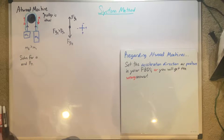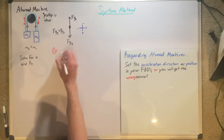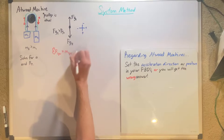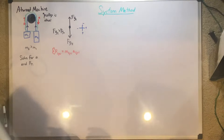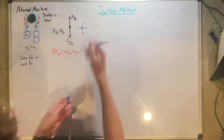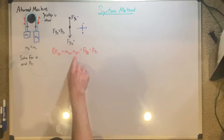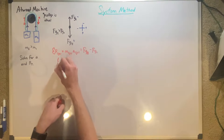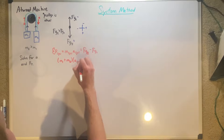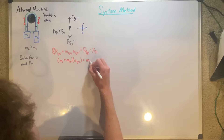Now what we need to do is find our sum of forces equation. The sum of forces for the system is equal to mass of the system times acceleration of the system, which equals force of gravity 2 — our positive term — minus force of gravity 1 — our negative term. Mass of the system simplifies down to M1 plus M2, because that's what mass of the system means.